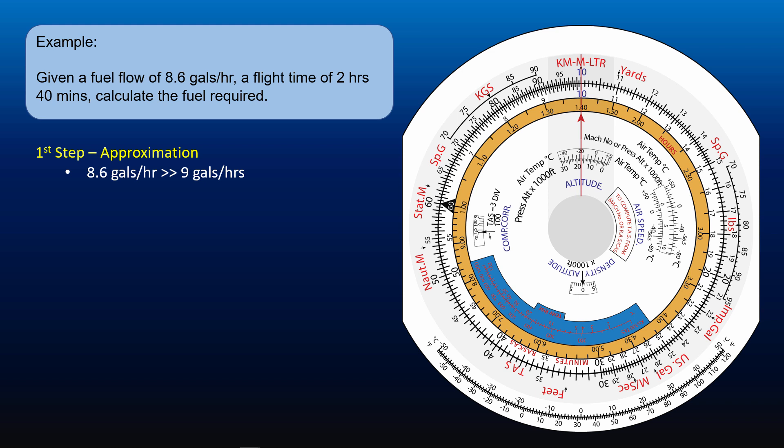Round up 8.6 gallons per hour to 9 gallons per hour, and 2 hours 40 minutes to 3 hours. We get our approximate value of 27 gallons, so our answer must be somewhere around that area.